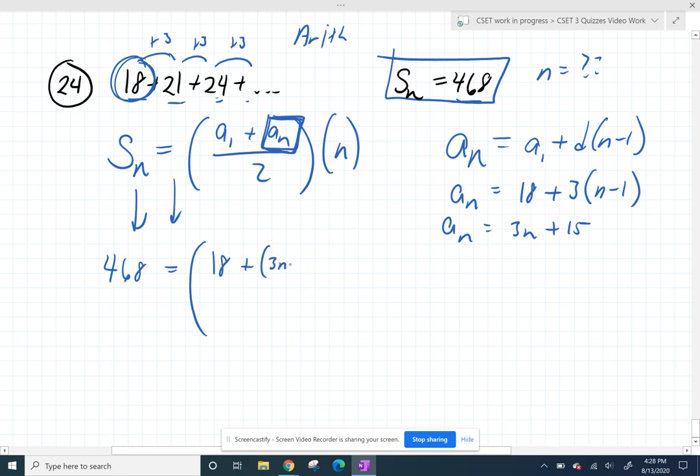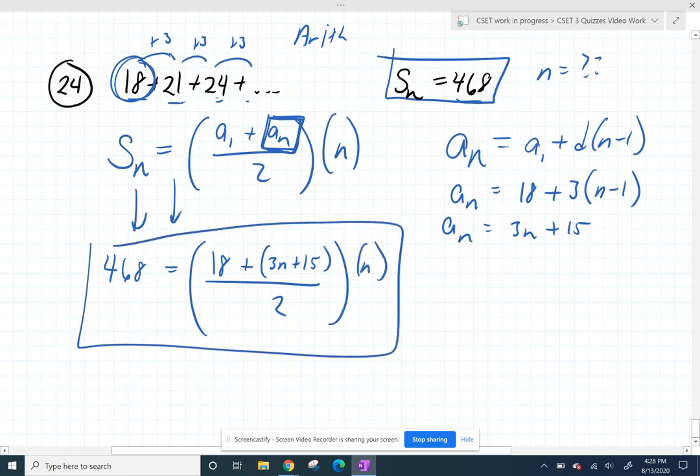So my a sub n is 3n plus 15, and now you might not like it, but I do, right? It's an equation with one unknown. That's n. I can solve.